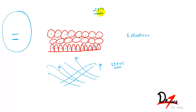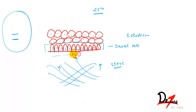Two to three weeks after the rupture of the buccopharyngeal membrane, certain areas of the basal cells of the ectoderm proliferate more rapidly compared to other areas. These proliferating cells form something we call the primary epithelial band.